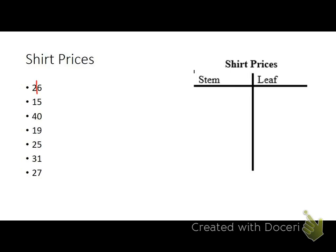And so, when we do that here in shirt prices, the ones digit becomes our leaf and the tens digit becomes our stem. So, the first thing we have to do is order all of our data, numerical data. Write them in order. So, we've got a 15, a 19, then 25, 26, 27, 31, and 40. Because we want to create our stems in order.